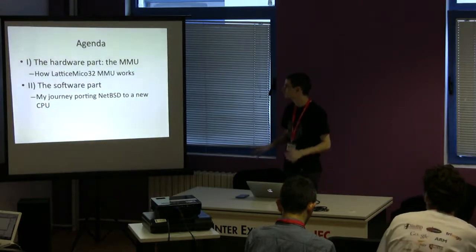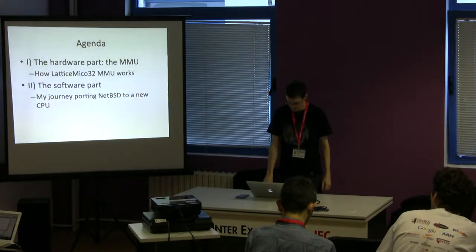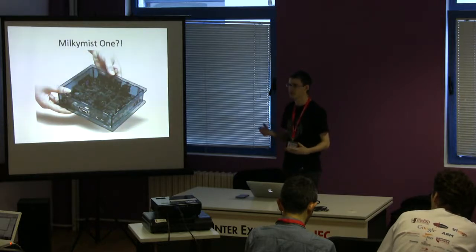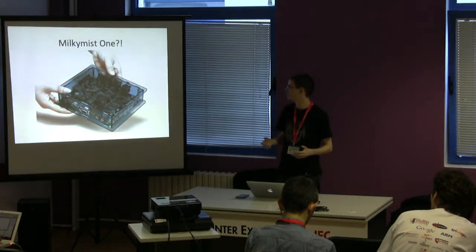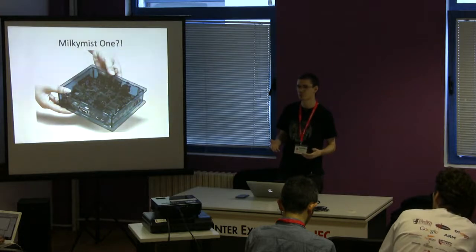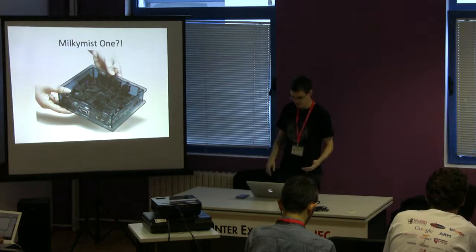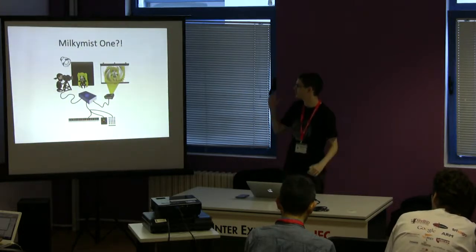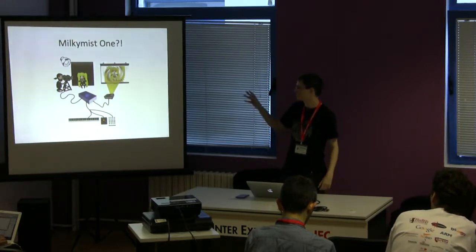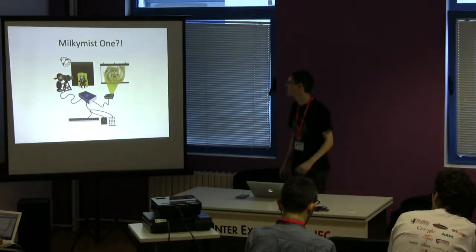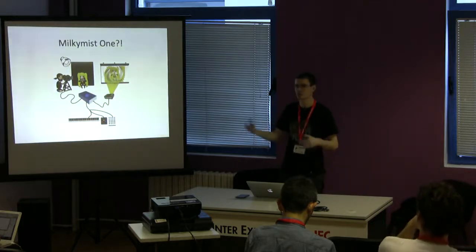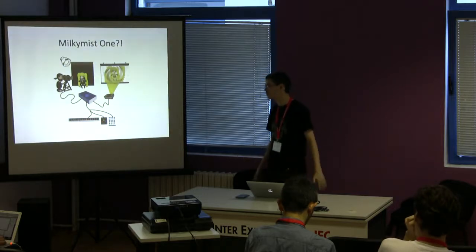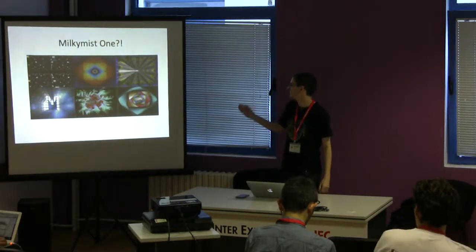Let's talk about these ports, specifically ported on the Milky Mist One board. First I'll talk about the hardware, the MMU, and then software. The Milky Mist One is an electronic device aimed at generating video effects in real time, synchronized to sources like audio input, MIDI, or DMX events. It's an artistic device — you can film a performer and project against a wall at a party or concert, applying real-time video effects like rotation, zoom, or blurring, and interact with devices like a MIDI keyboard.